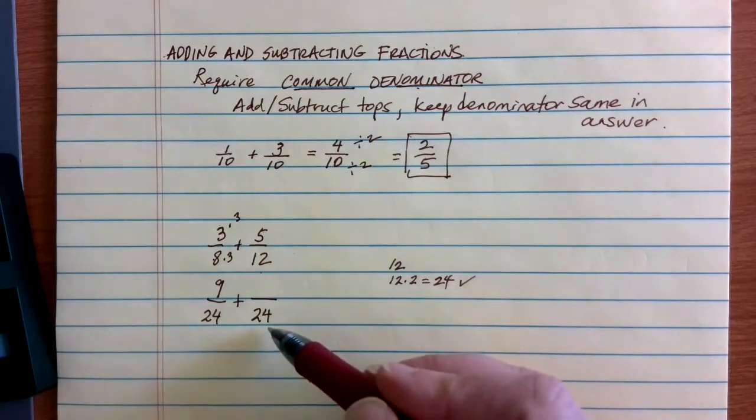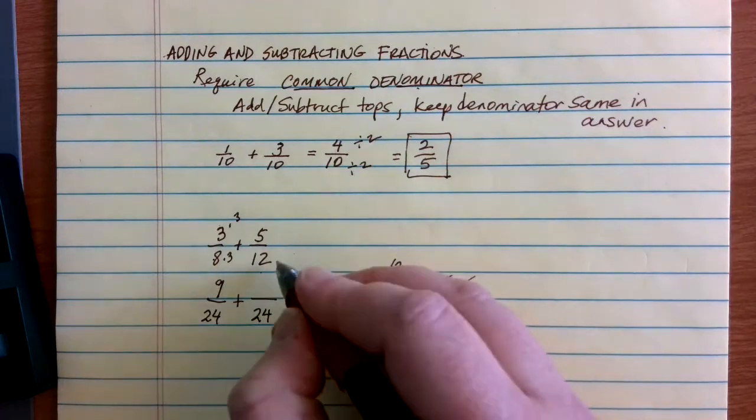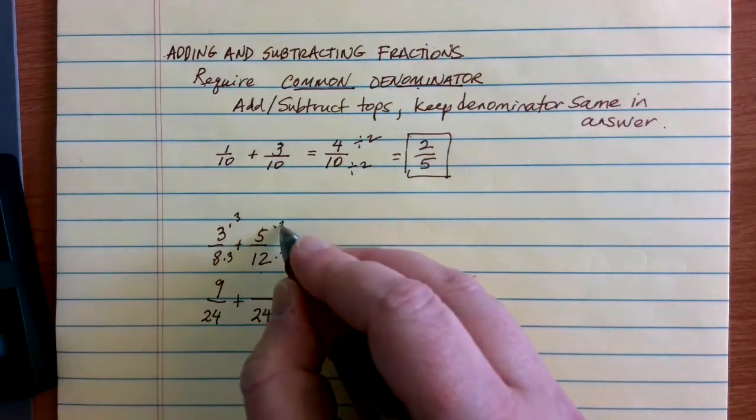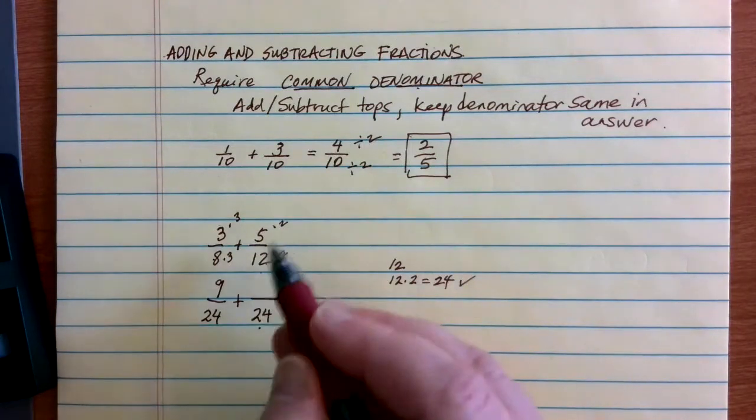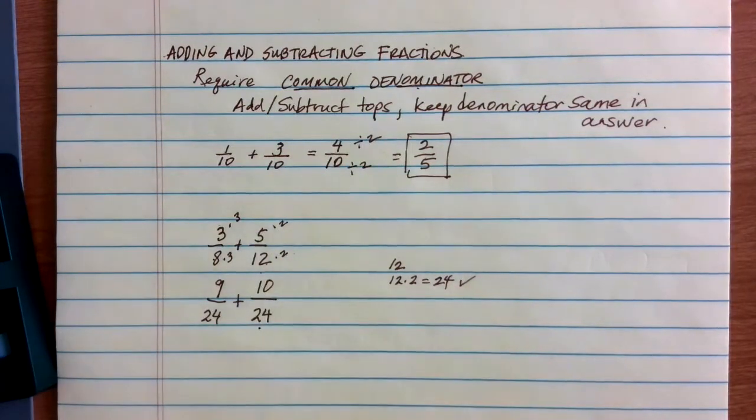Now I'm going to come and do the same thing here. I have 24 as the denominator I want. I started with 12, so I'd have to multiply by 2 to get there. 12 times 2 gives me the 24 that I want on the bottom. 5 times 2 gives me 10 as my new top.